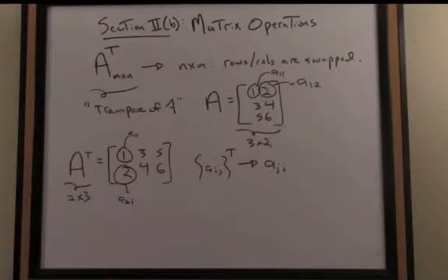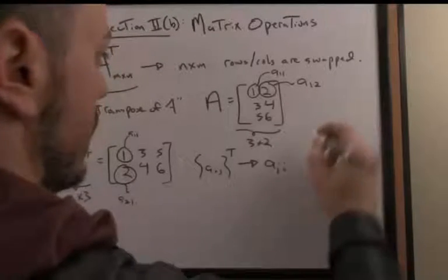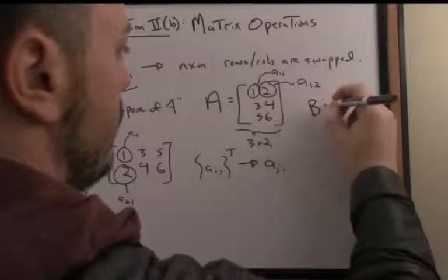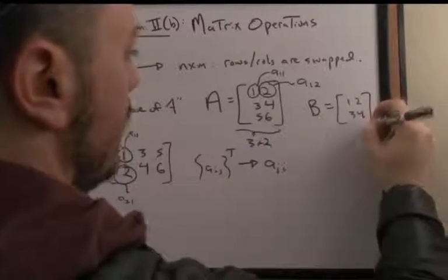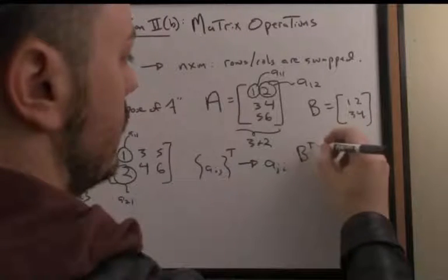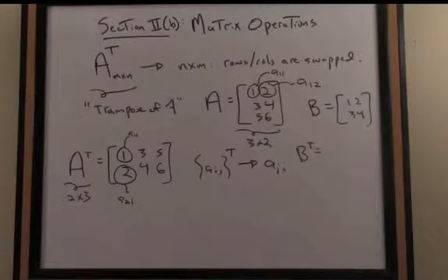Another way to see the transpose operation is to consider a square matrix. Let's define matrix B as the 1, 2, 3, 4 matrix and take the transpose of B.